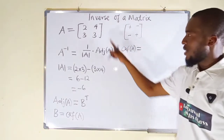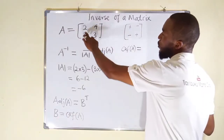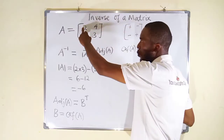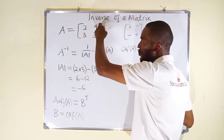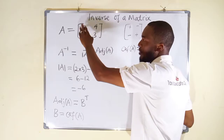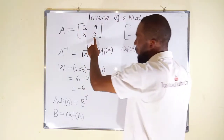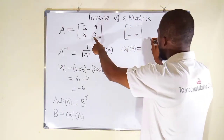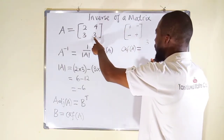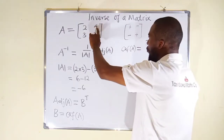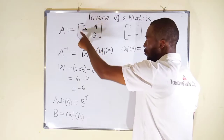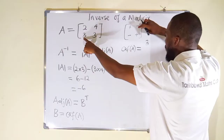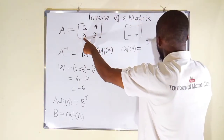Each and every entry has its unique cofactor. For the first row, first column element, we delete its row and column — we are left with 3. Multiply by the positive sign, it remains positive 3. Moving on, closing that column and row, we are left with 3. Multiply by the negative sign, it becomes negative 3.